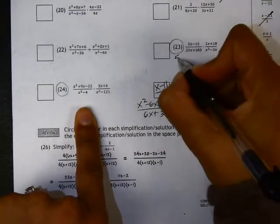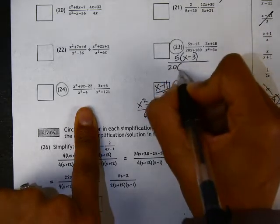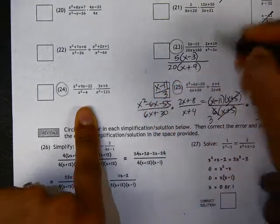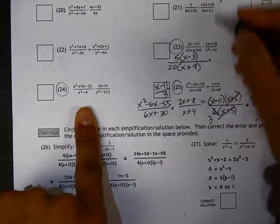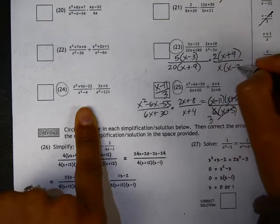So in the numerator here we have a common factor of 5. In the denominator we have a common factor of 20. Numerator in the second fraction has a common factor of 2, and the denominator has a common factor of x.